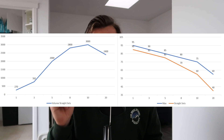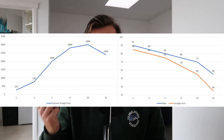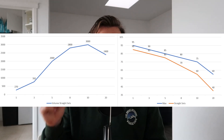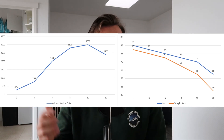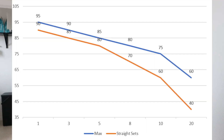To really understand rep ranges you have to take a look at two graphs. One of them essentially shows what percentage you use for a given rep range, and the other shows how much volume that actually equates to.